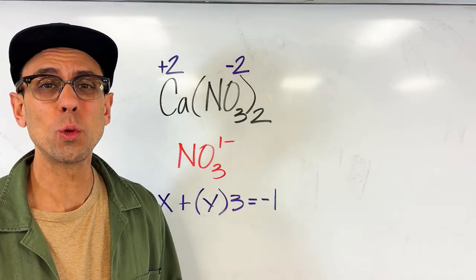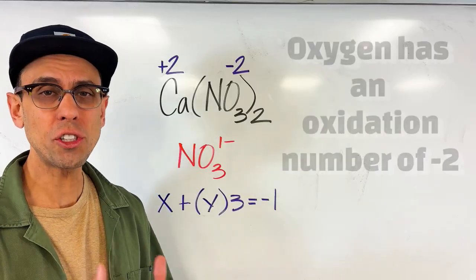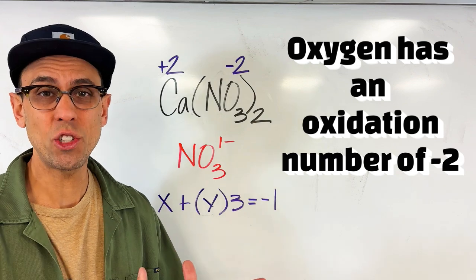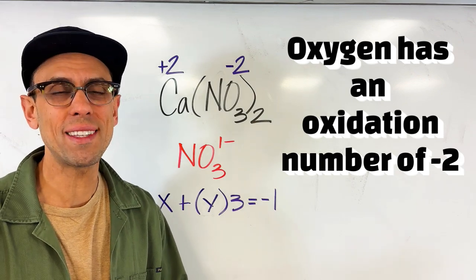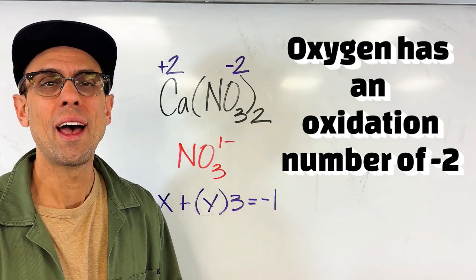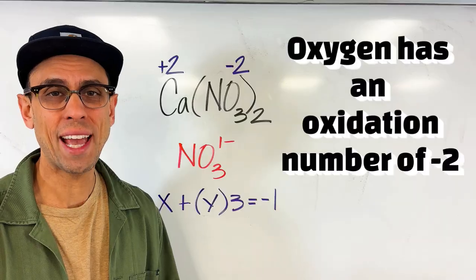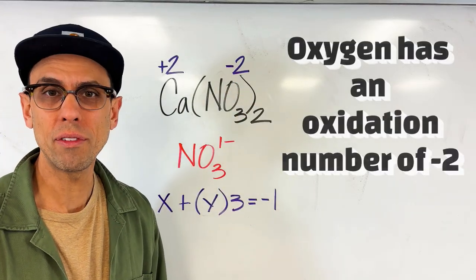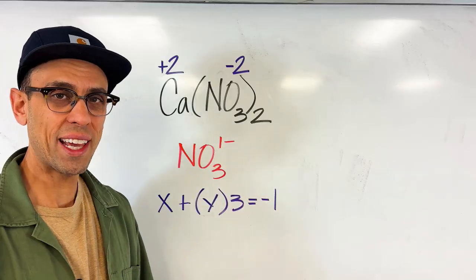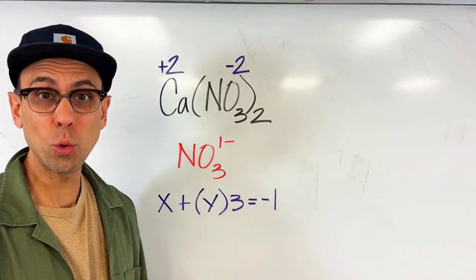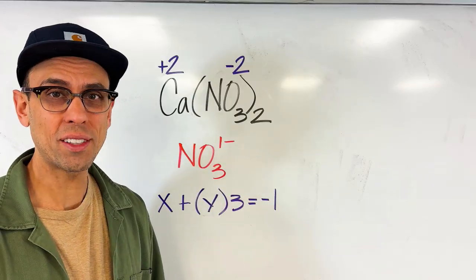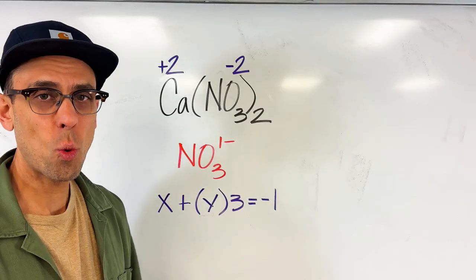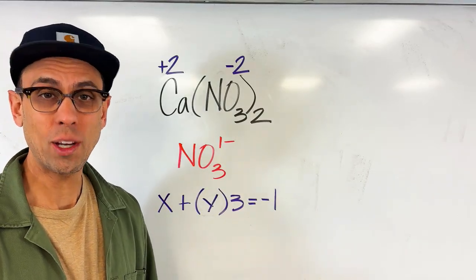Okay there's another rule that comes into play here. Oxygen is one of the few elements that has a rule dedicated to it all itself and that rule states that oxygen always has an oxidation number of negative two. So you see I already went ahead and labeled the negative two above the O.